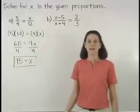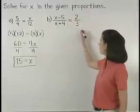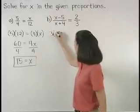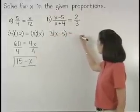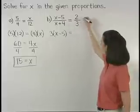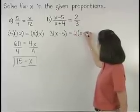In part B, the product of the extremes, x minus 5 times 3, or 3 times x minus 5, equals the product of the means, x plus 4 times 2, or 2 times x plus 4.